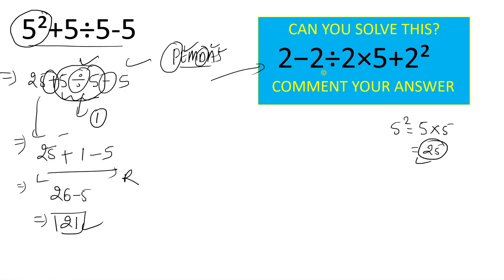We have 2 minus 2 divided by 2 times 5 plus 2 square. So again we will solve for the exponent part first, which is here 2 square. And 2 square is 2 times 2 which equals 4. So we can write 2 minus 2 divided by 2 times 5 plus 4.